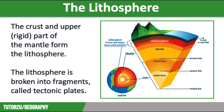There are two types of lithosphere. Oceanic, which is topped by oceanic crust, which is dense and subducts when two plates collide. And continental, which is topped by continental crust and is less dense and too light to subduct. Therefore it gets pushed up when two plates collide.